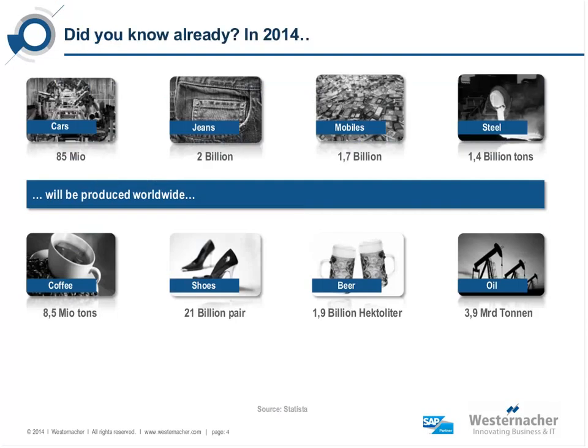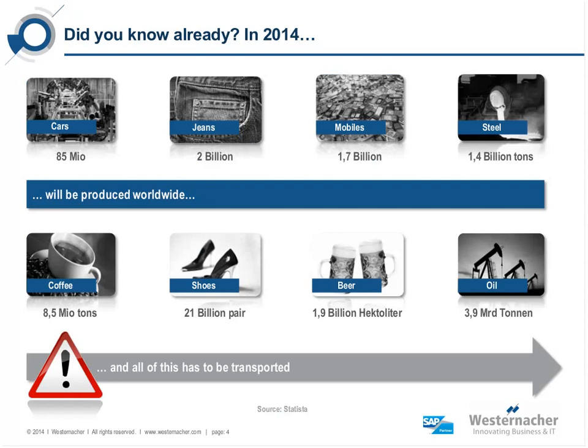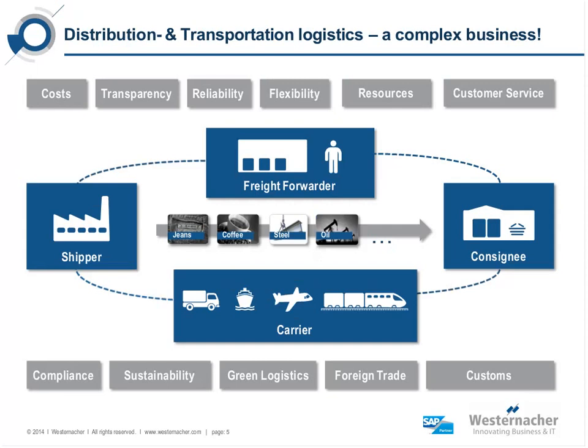Can you imagine how many goods and products will be produced worldwide within several industries over the year? Just to give you a flavor, these are the impressive numbers we expect for 2014: 85 million cars will be produced, 1.4 billion tons of steel, 8.5 million tons of coffee — and from a logistical point of view, all of this has to be transported. This means for logistics companies that today's distribution and transportation logistics is a very complex business, dominated by globalization, increased price competition, and more demanding operational and financial performance, with pressure on supply chain management increasing dramatically.